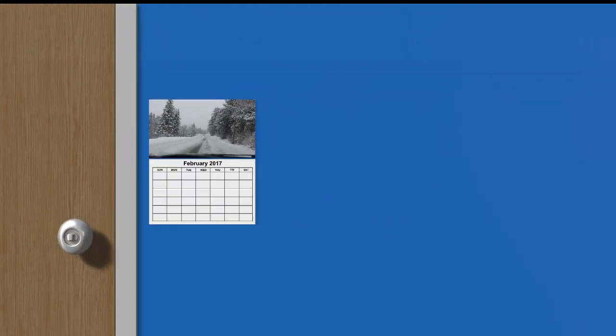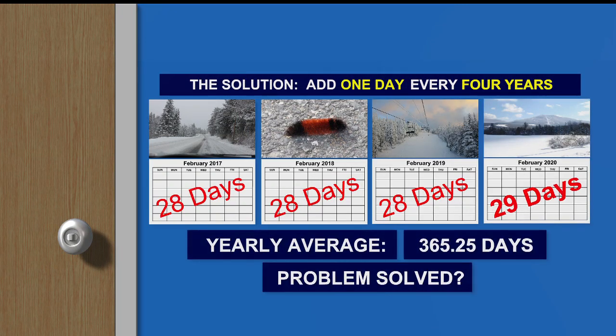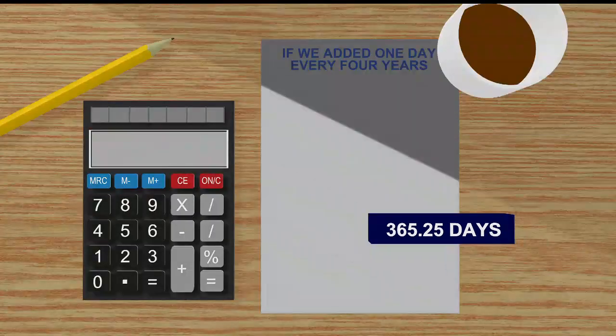So the solution: one day every four years, which puts the average at 365.25. Problem solved, right? Almost — not quite.